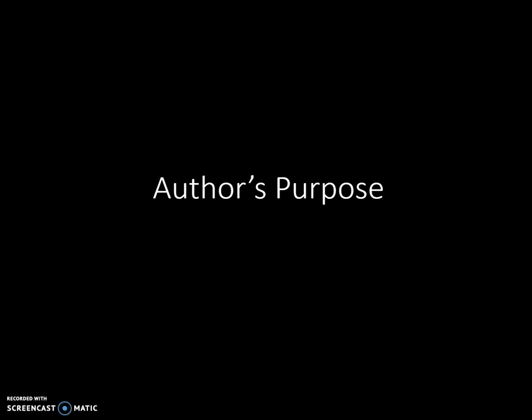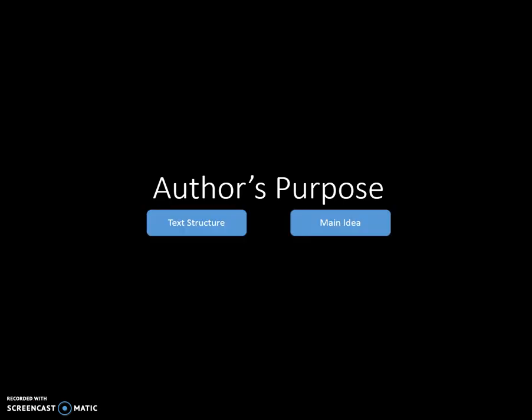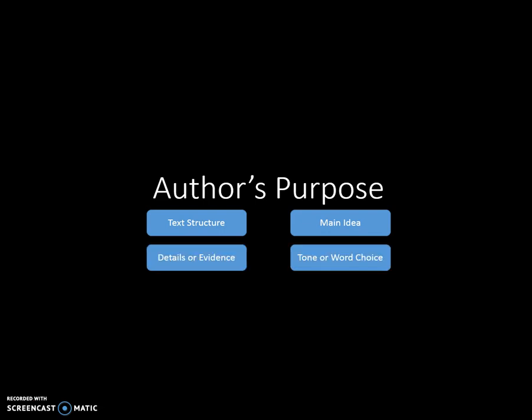Authors do not necessarily tell us why they wrote something. Rather, they give us hints based upon the text structure, the main idea, the details and evidence that they give us, and the tone or word choices that they've used in their writing. As we read, we attempt to piece together the purpose based upon all of this information.